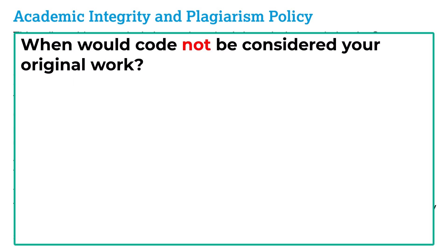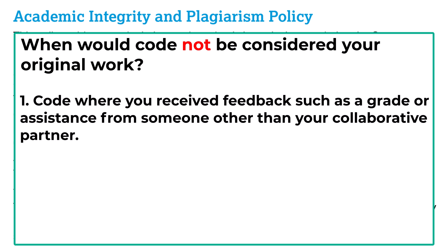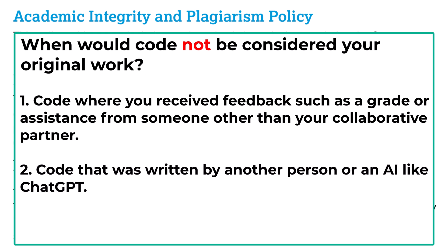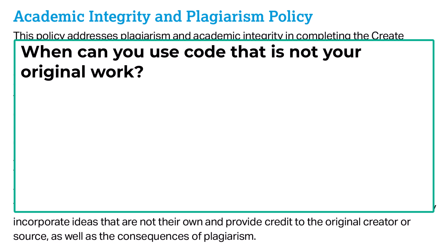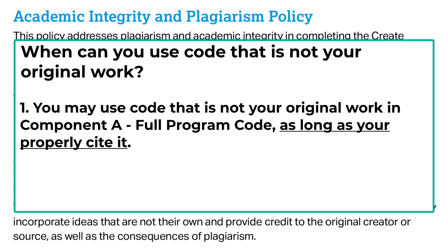Here are some situations where program code wouldn't be considered your original work: code where you received feedback such as a grade, or assistance from your teacher or someone else other than your collaborative partner; code that was written by another person or an AI like ChatGPT; or code that you found online or in a sample project. If you want to use code that is not considered your original work, you may do so in Component A as long as you properly cite it. You can learn how to properly cite code in resource number one.